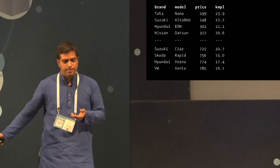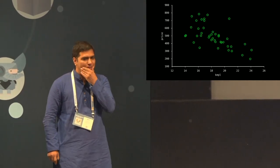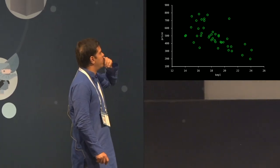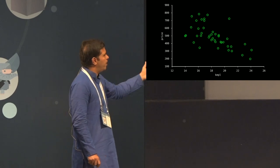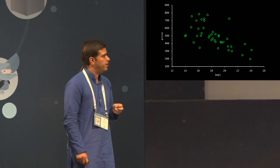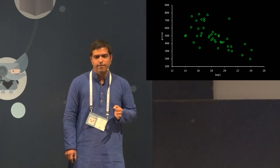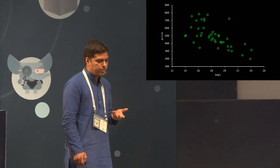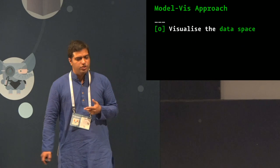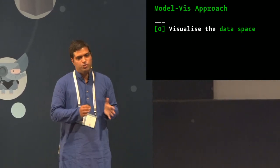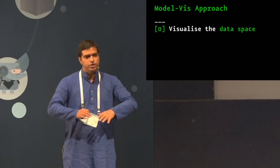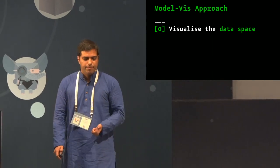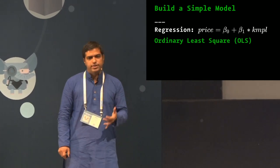The first step is to visualize the data. Price is on one axis going from about 200K to 900K, and mileage from about 14 to 24 km/liter. Each circle is a data point. The principle in model visualization — step zero, step one — is to visualize the data space. I'm calling it the 'data space' to abstract it from just a graph. The first step is always to visualize the data space.